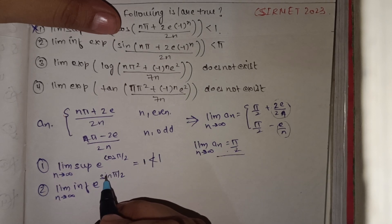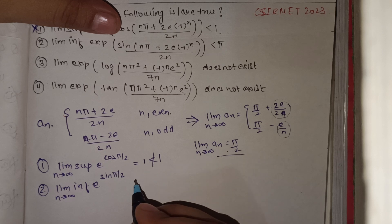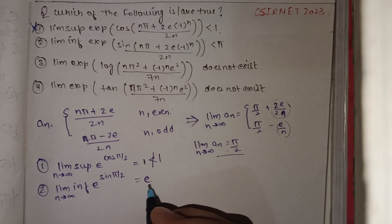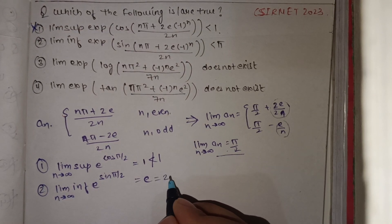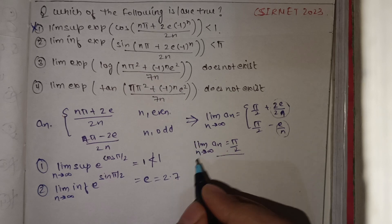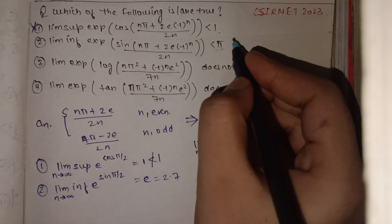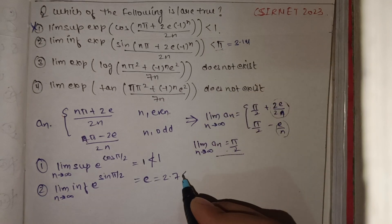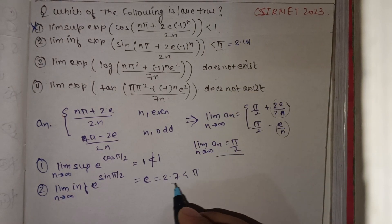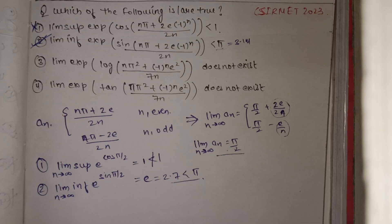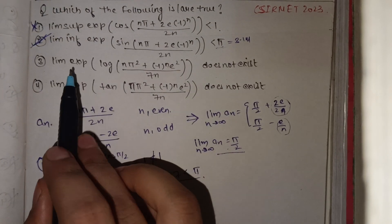sin(π/2) = 1, so e^(sin(π/2)) = e. The value of e ≈ 2.7... and π ≈ 3.14, so e < π. Therefore this statement is correct, and option 2 is correct.